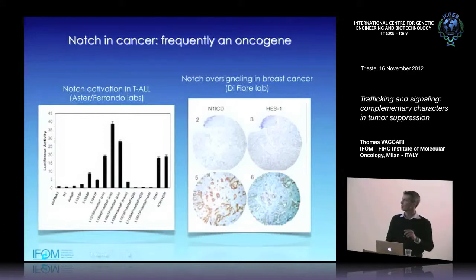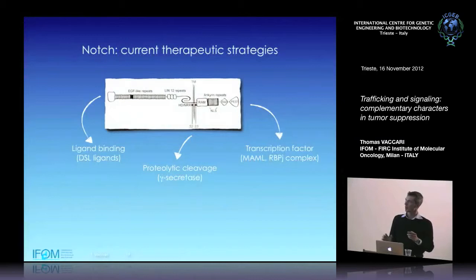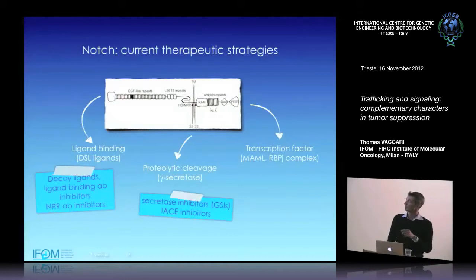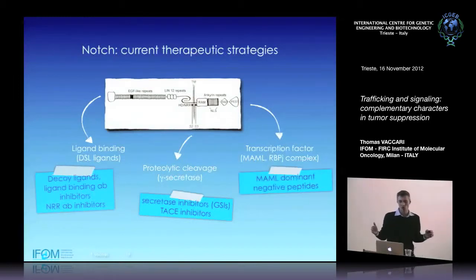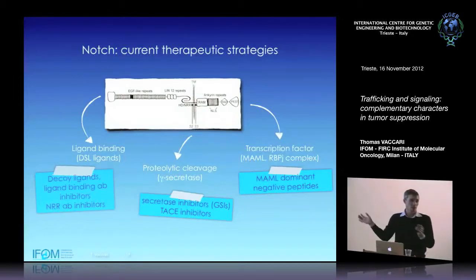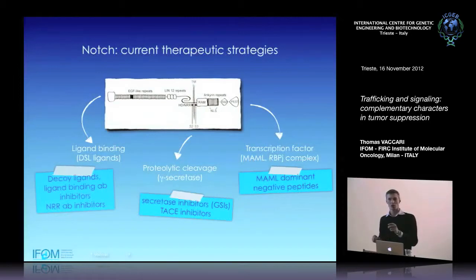Why bother with the V-ATPase? Because there are several ways to block Notch signaling that have been developed — decoy ligands, inhibitory antibodies, gamma-secretase inhibitors (GSIs), inhibitors of other cleavage enzymes, and nuclear targets. But the common feature of all of these is that none are in the clinic. You have basically 70% of T-ALL and various cancers for which there is no specific drug you can give to a patient. So can we use V-ATPase inhibitors to block signaling?